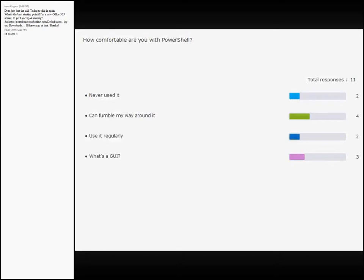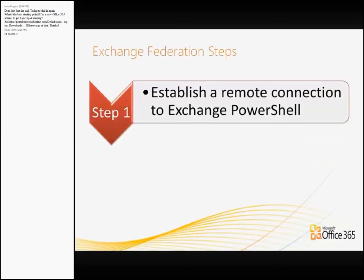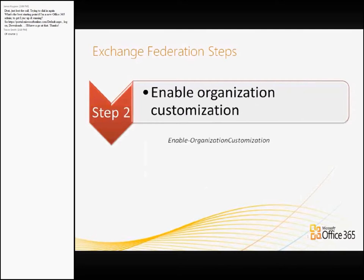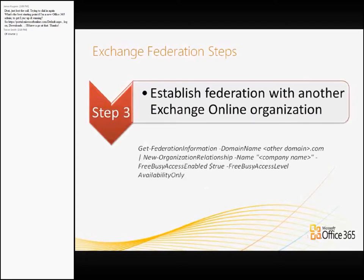I'm just going to show you through the different steps required for the Federation, and then I'll actually perform a live demonstration. The first step is to establish a remote PowerShell connection. I can point you to an article I've written previously which takes you through all the steps. Once we've established that PowerShell connection to Exchange Online, one important step — a one-time only step — is to actually enable customisation of your organisation, which allows you to turn certain features on and off. If you've used this commandlet before, you don't need to run it again.